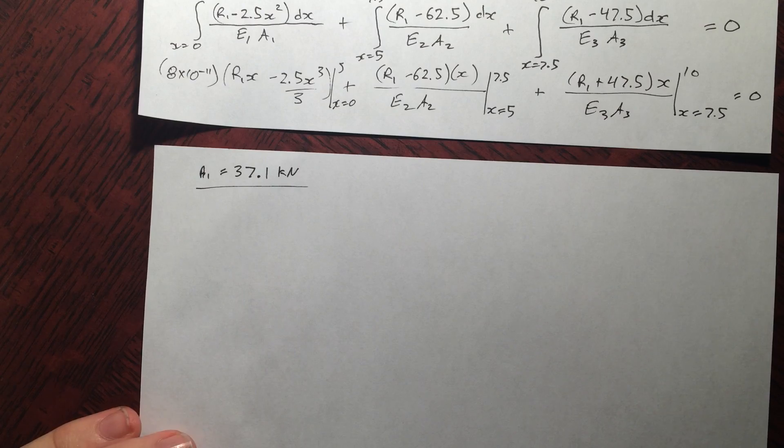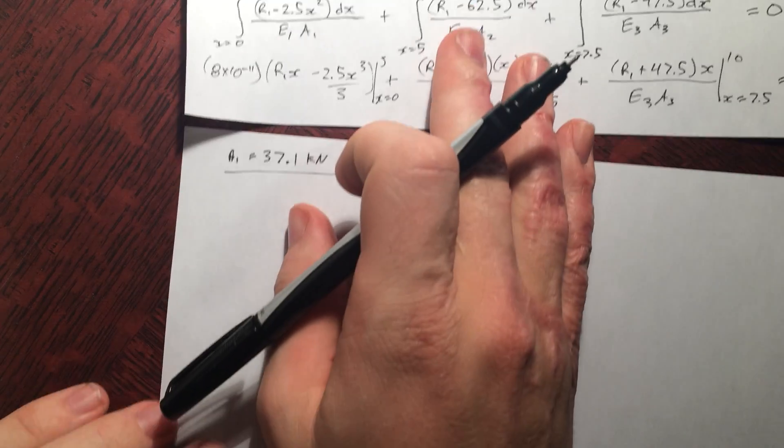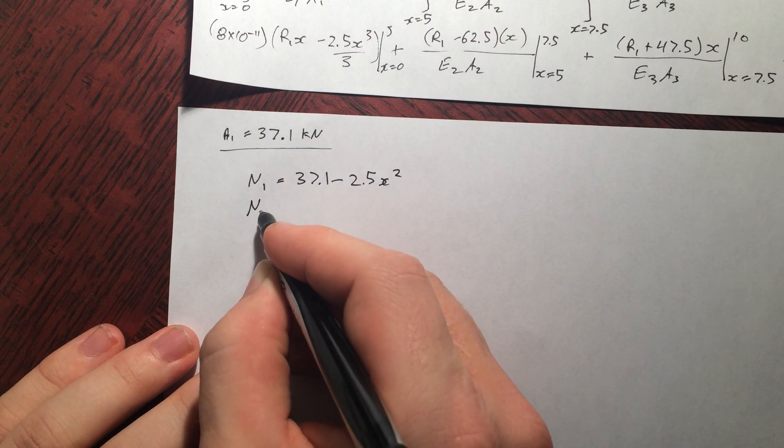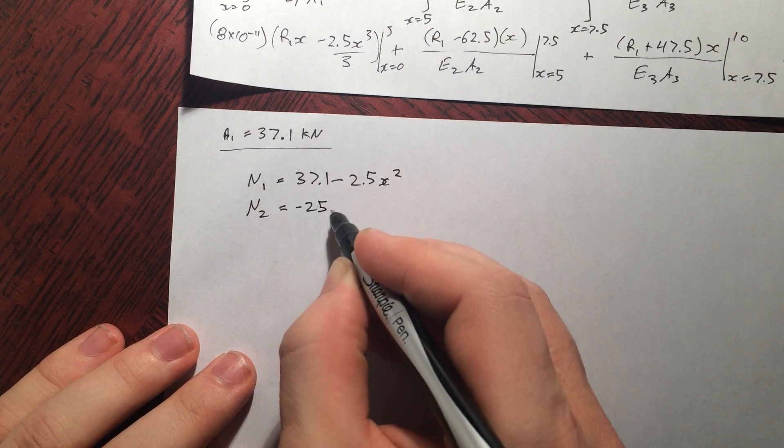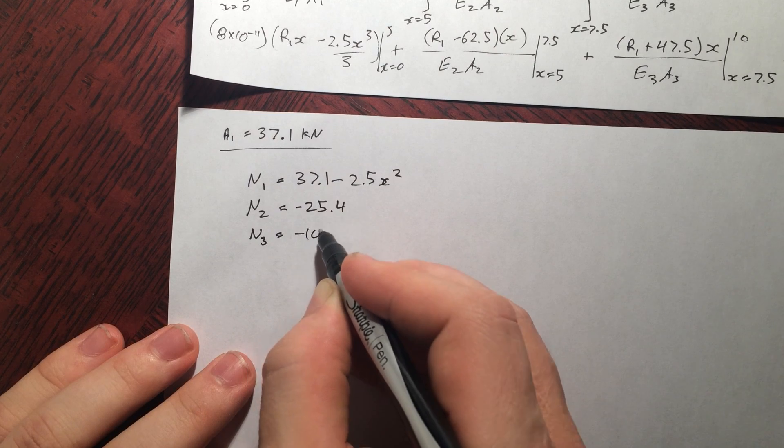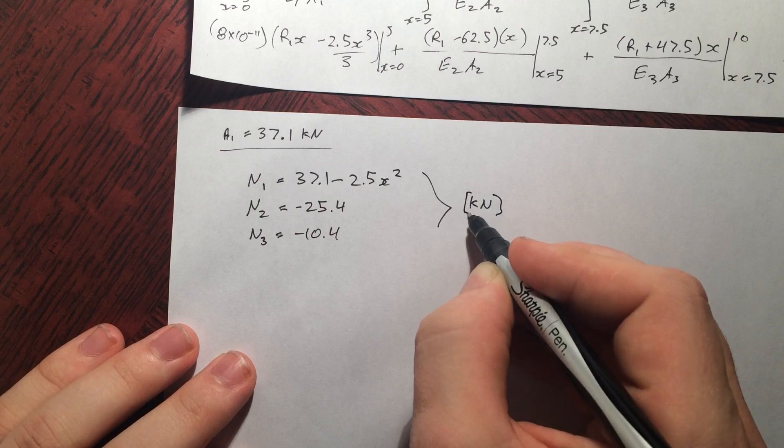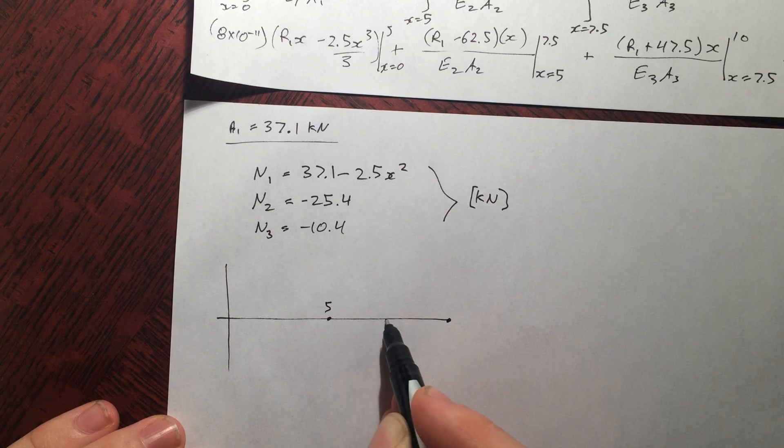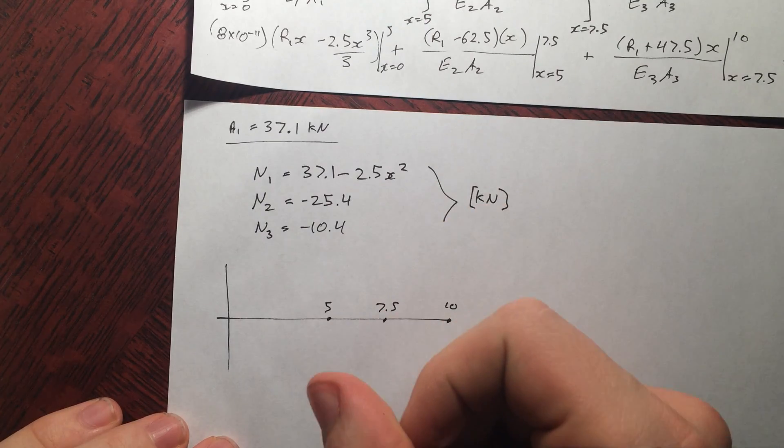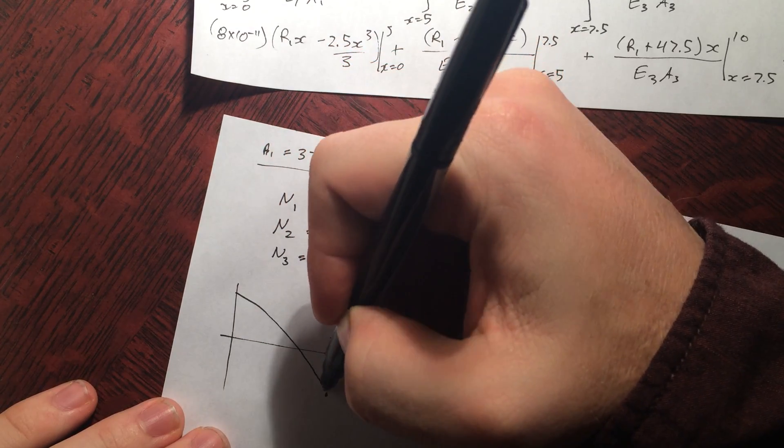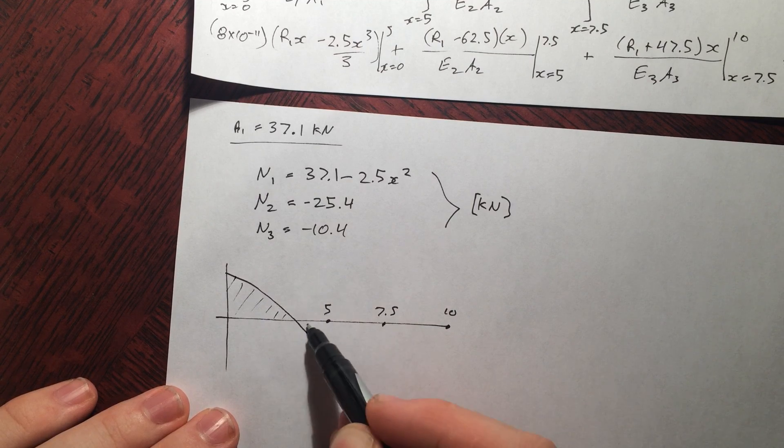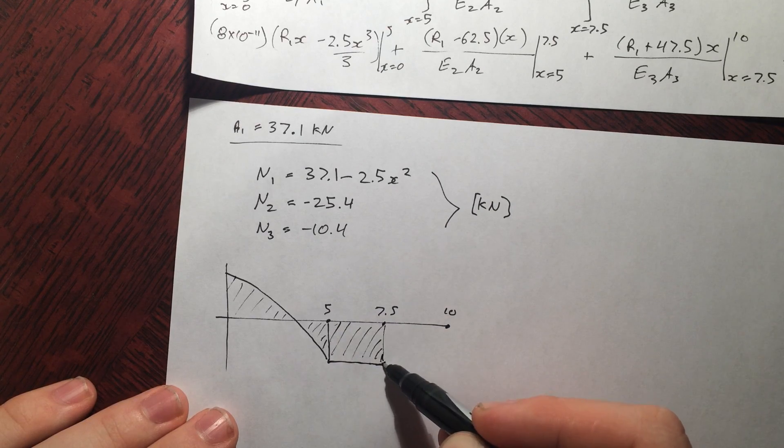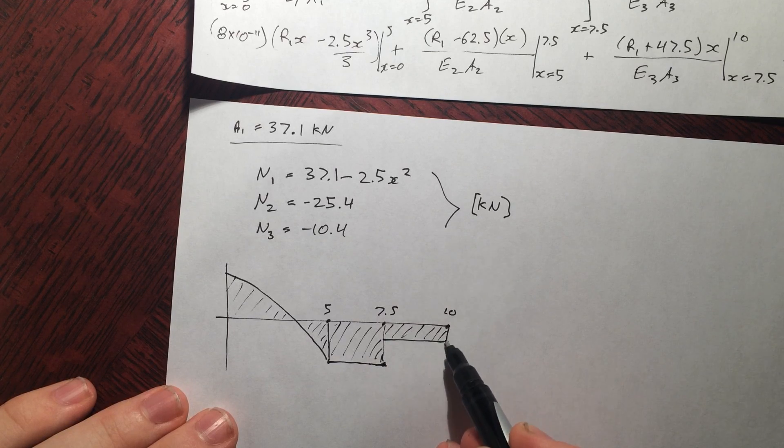So now we can go back and find all of our normal force equations because we had them here. If we plug R1 into each of those, we'll get our answers. N1, N2, plugging in R1 just into that first equation, N3. And these are all in terms of kilonewtons, so remember that later. So if we want to quickly graph this, it looks something like this. 5, 7.5, 10. And it's going to go down like this, starting up at some high value. It's a quadratic. X equals 0, it goes there, just like this. And then of course we remain down here at negative 25 and jumps up to negative 10.4. This is N.